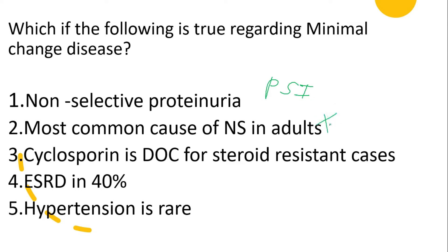Minimal change disease is not the most common cause of nephrotic syndrome in adults — membranous nephropathy is. Minimal change disease is the most common cause of nephrotic syndrome in children. Cyclosporine is not the drug of choice; that is cyclophosphamide. ESRD is not seen in 40%; it is seen in less than 5%. Therefore, the correct answer is that hypertension is rare — minimal change disease is associated with normal blood pressure. The correct answer is option number 5.